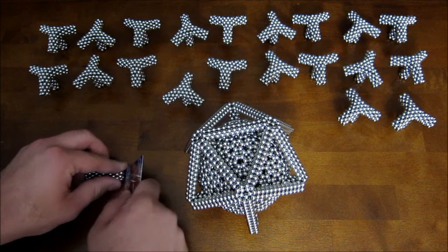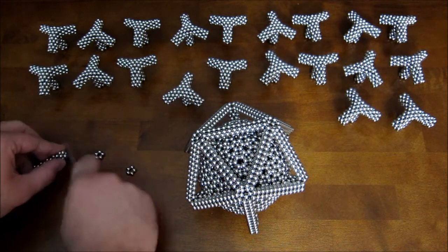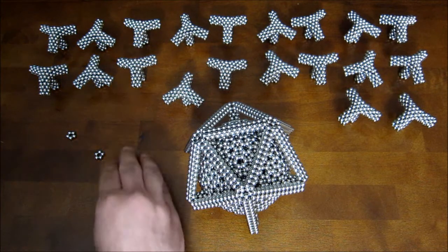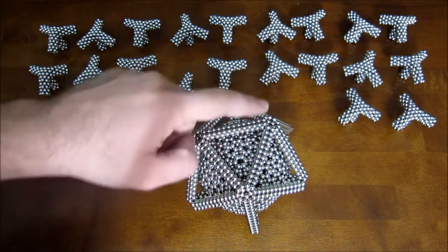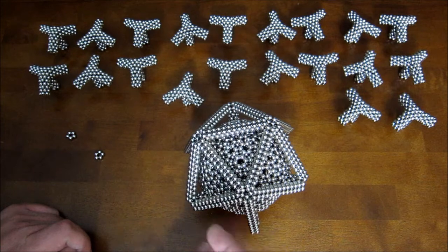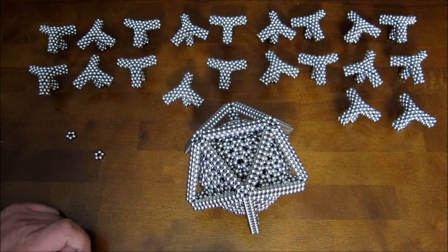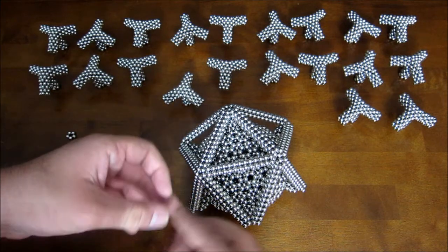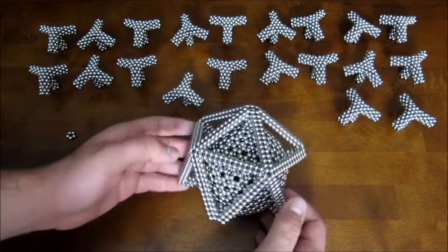One more thing that I forgot to mention that you will need to know if you haven't watched my icosahedron frame tutorial video before is that when you complete each of these corners, you want to take a pentagon ring and add it down like that. And that really helps to add a lot of strength to the whole shape.